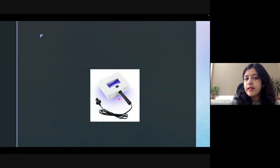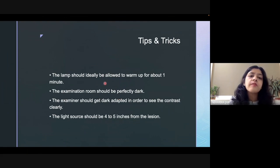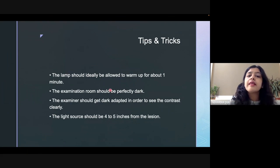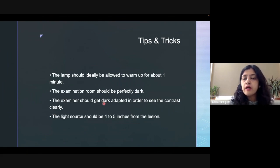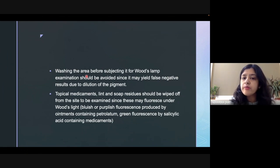This is how a Wood's lamp looks like. Before using a Wood's lamp, we should be aware of certain tips and tricks. The lamp should ideally be allowed to warm up for around one minute prior to its use. The examination should be carried out in a perfectly dark room. The examiner should get adapted to the dark prior to the examination. The light source should be kept at a distance of around 4 to 5 inches from the lesion. We should avoid washing the area prior to the examination, because sometimes the pigments are water-soluble and if they get diluted, we can get a false negative result.